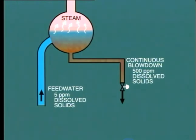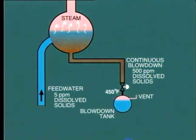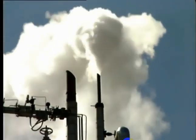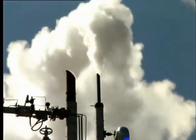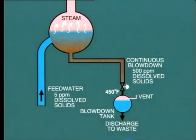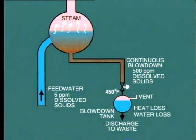As the blowdown water is at relatively high temperature — between 400 and 500 degrees Fahrenheit — it is discharged into a blowdown tank. This permits some of the high temperature water to flash off into steam and be vented to atmosphere, while the remaining water is discharged to waste. Of course, there are some losses involved: first, the loss of heat contained in the water, and secondly, the loss of water itself, with a consequent increase in makeup requirements.